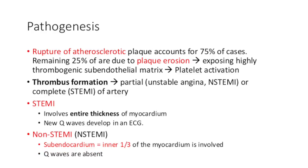In terms of pathogenesis, there are a number of causes of acute myocardial damage. A ruptured atherosclerotic plaque accounts for 75% of cases, and the remaining 25% are due to plaque erosion exposing highly thrombogenic subendothelial matrix, leading to platelet activation and ultimately thrombus formation, which causes partial or complete blockage of the artery supplying that part of the heart. If it's partial, you tend to see unstable angina and NSTEMI; if it's complete, you tend to see the STEMI variation.